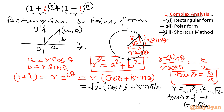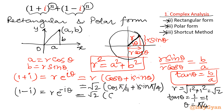Similarly, for 1 minus i I will write r·e^(−iθ). The value of r will be the same — root 2 — except the imaginary part becomes negative: root 2 times (cos π/4 minus i sin π/4).